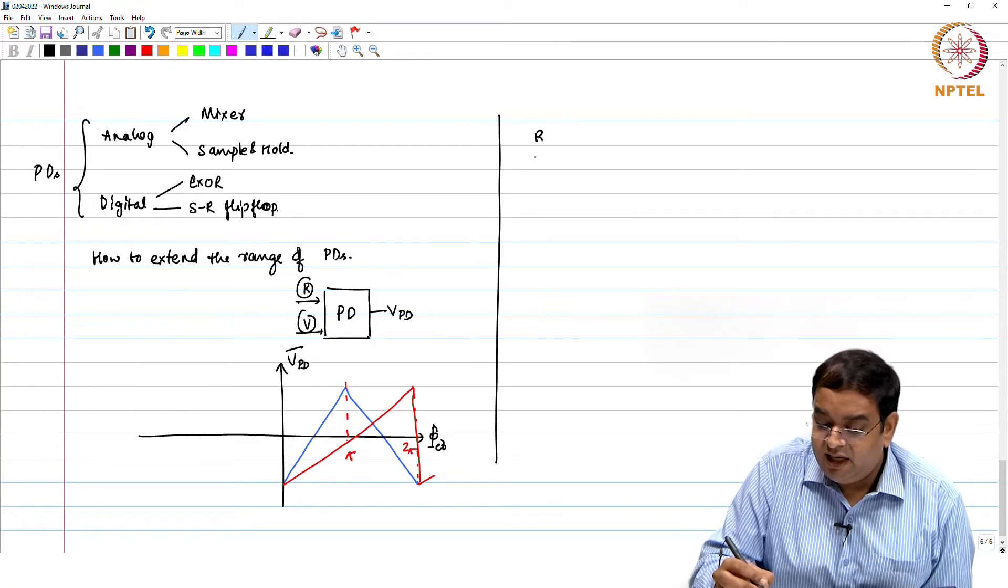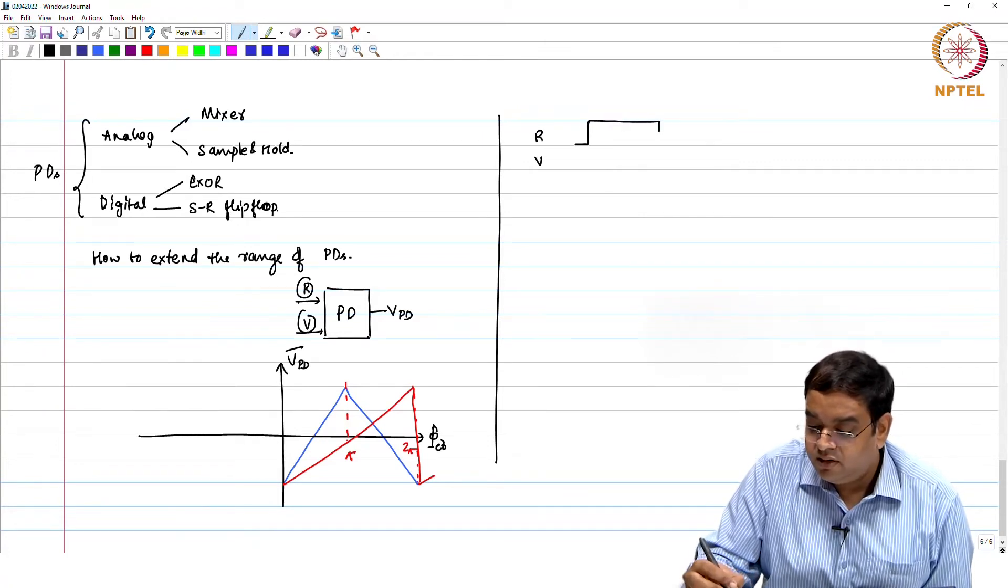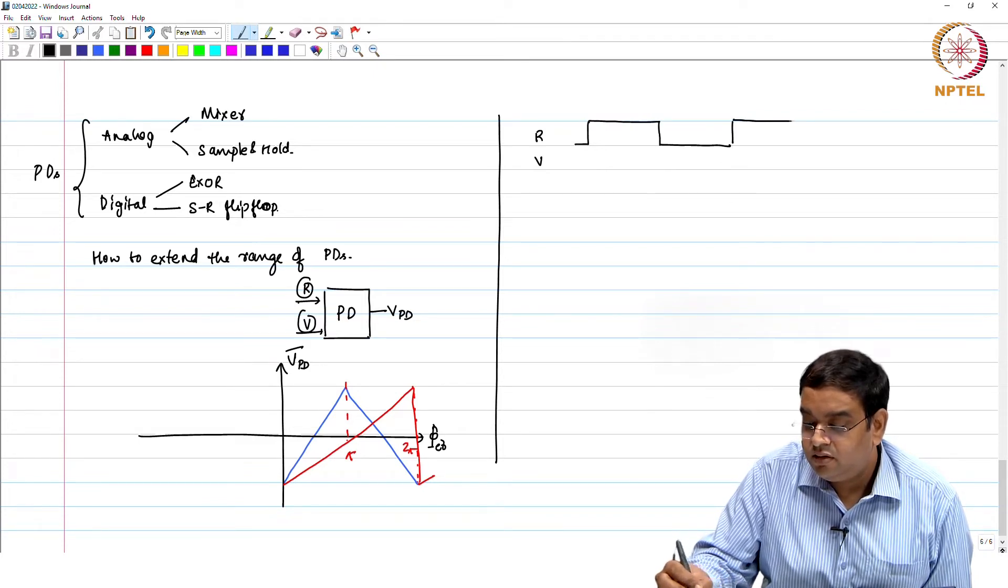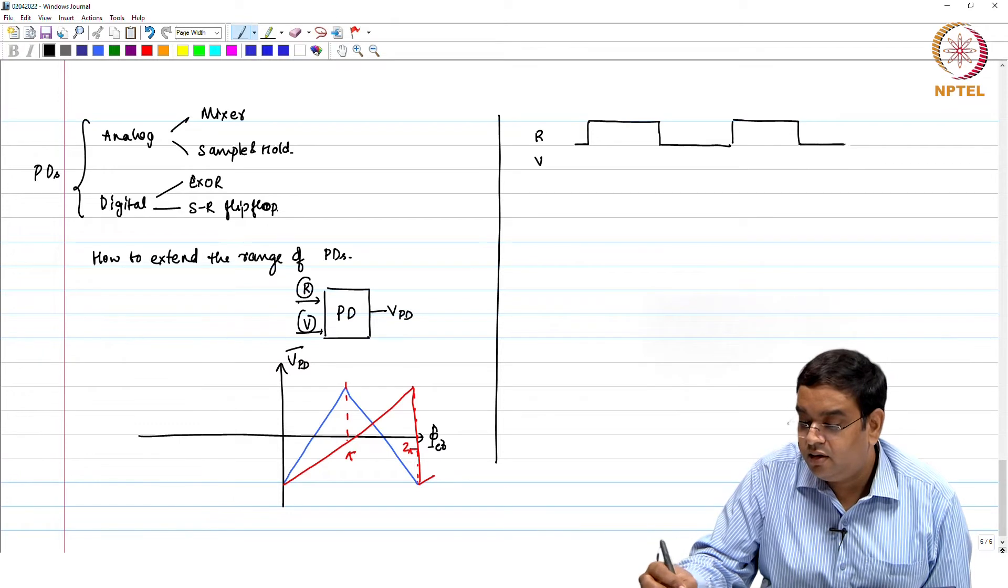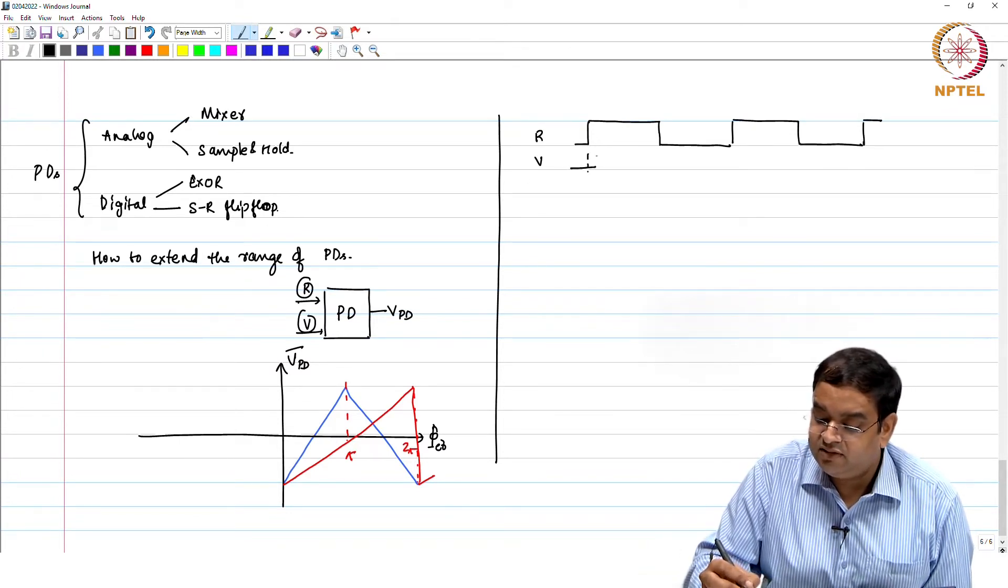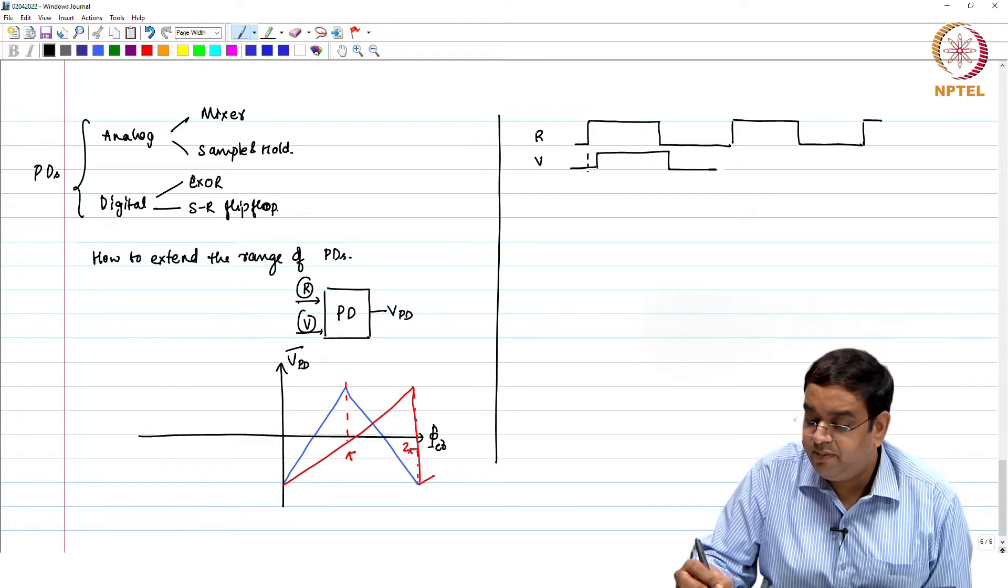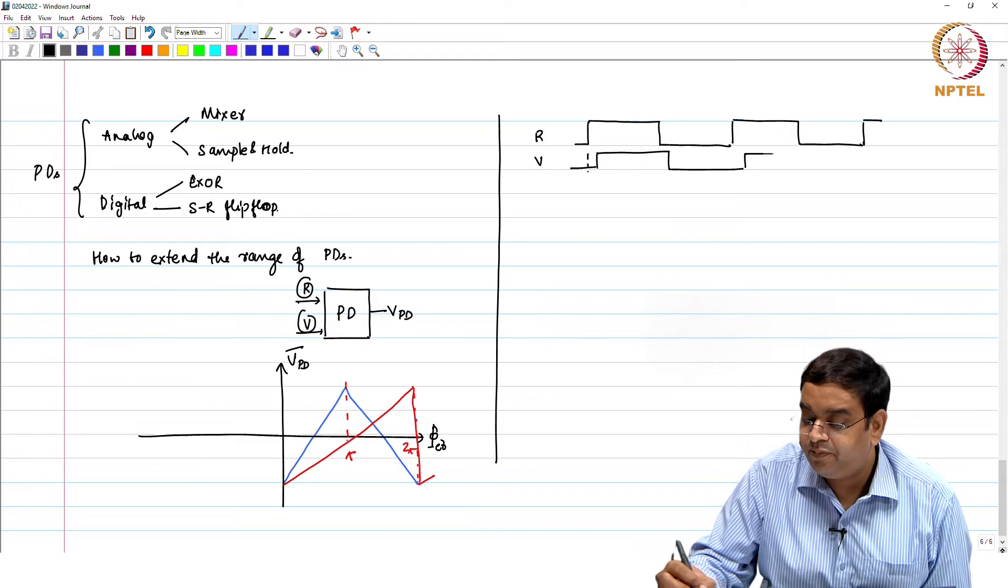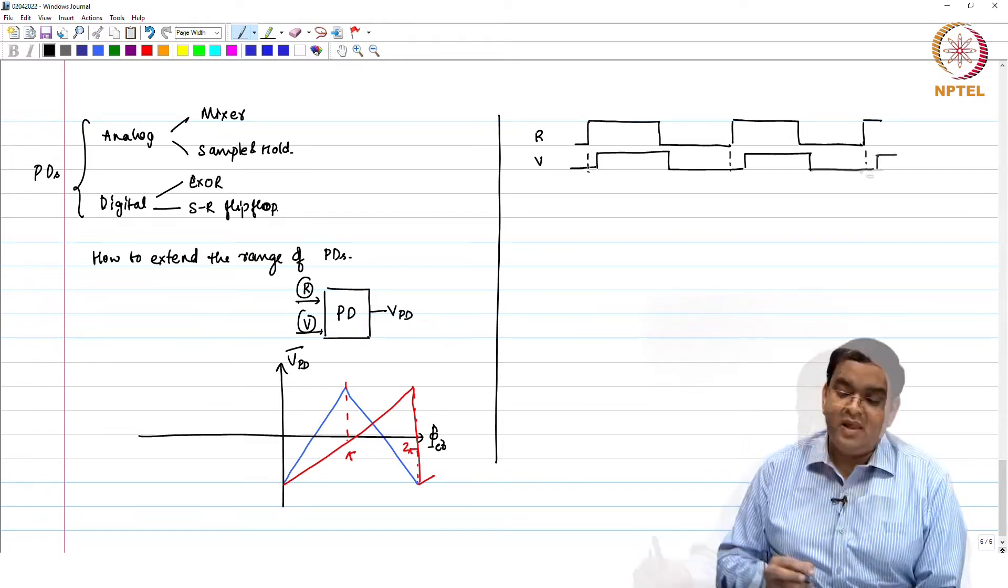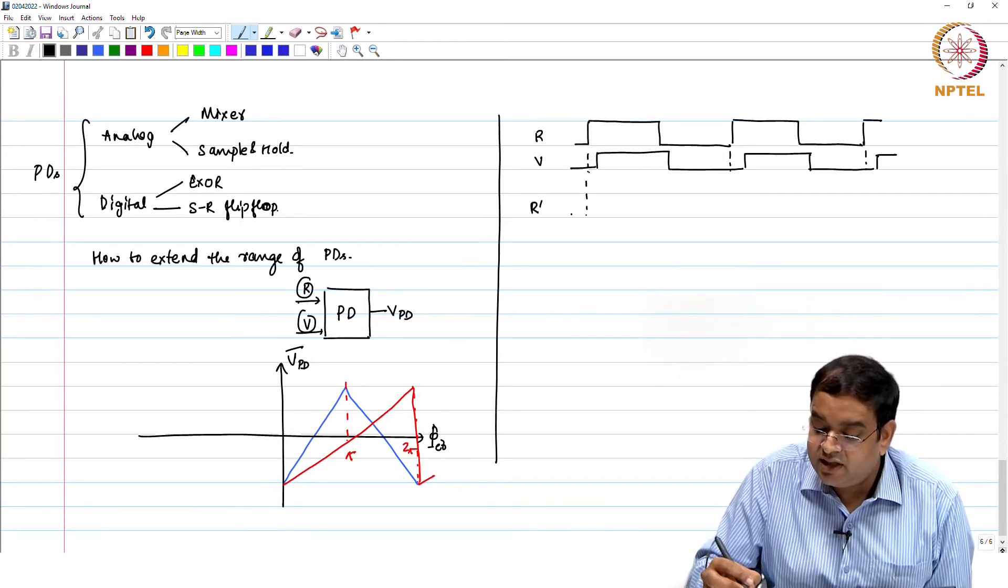So what it means, let us see. Let us say I have my actual R and V signals like this. And the V signal has a phase error, that is fine. The frequency I am keeping the same.